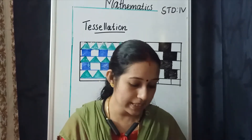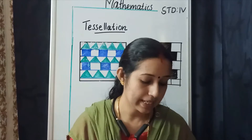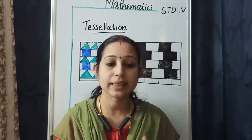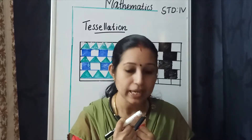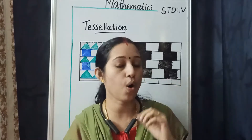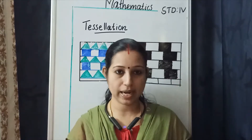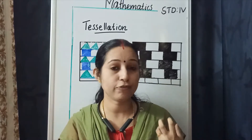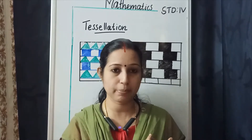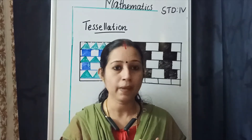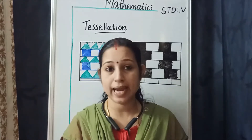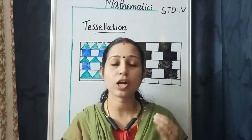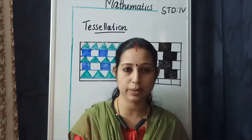Tessellation is a pattern of shapes that fit together with no gaps or overlap. Different tessellating shapes include square, rectangle, hexagon, and triangle. These are examples of tessellating shapes — using these shapes, we can make a tessellation.